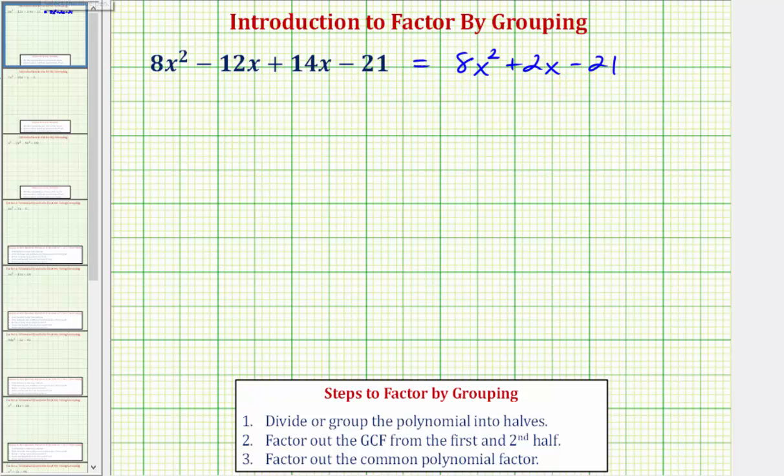For this example, we're just getting used to the factor by grouping technique. In our next lesson, we'll learn how we know to write 2x as negative 12x plus 14x to apply factor by grouping.